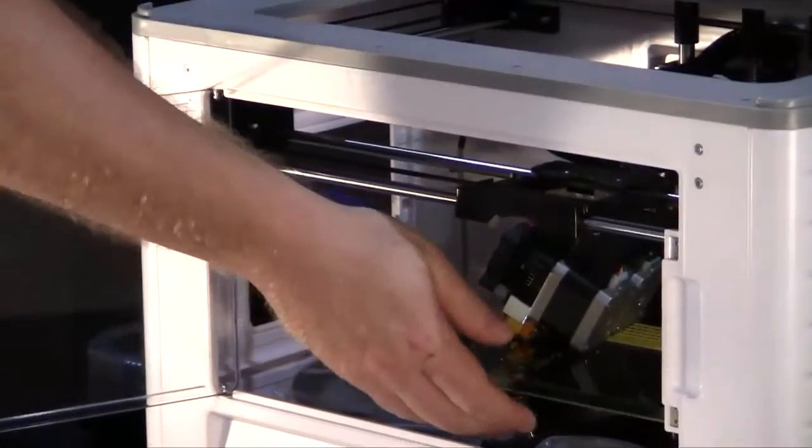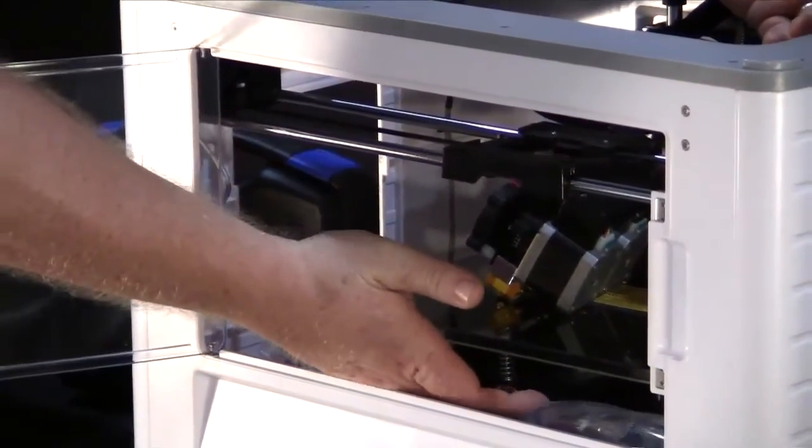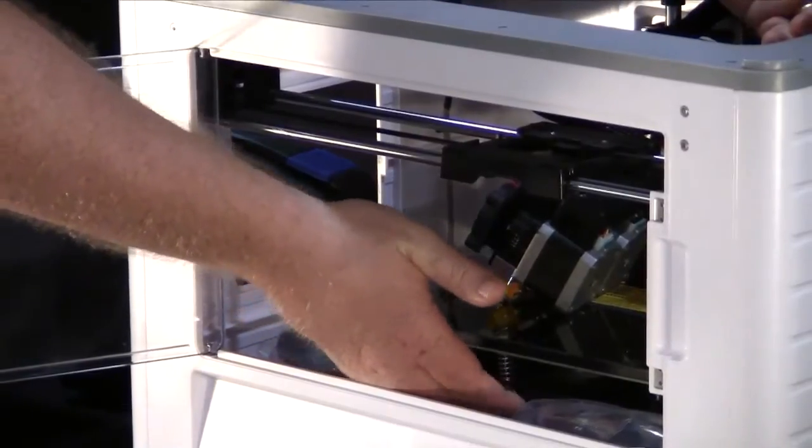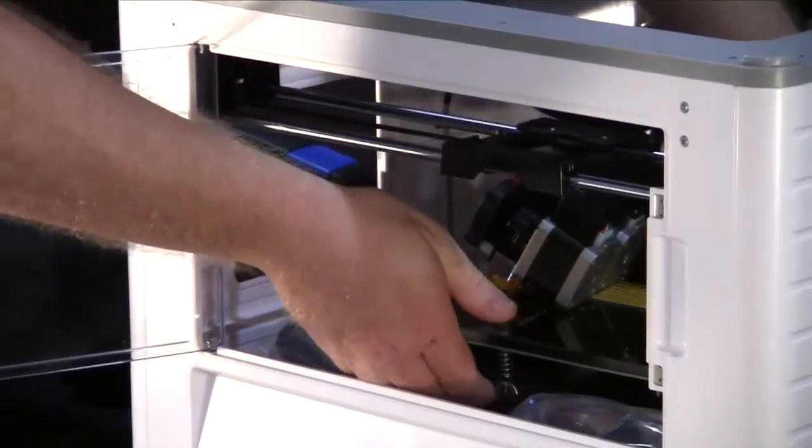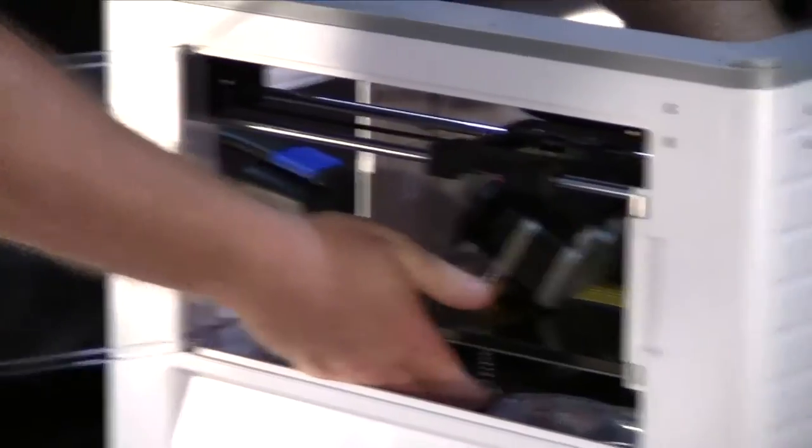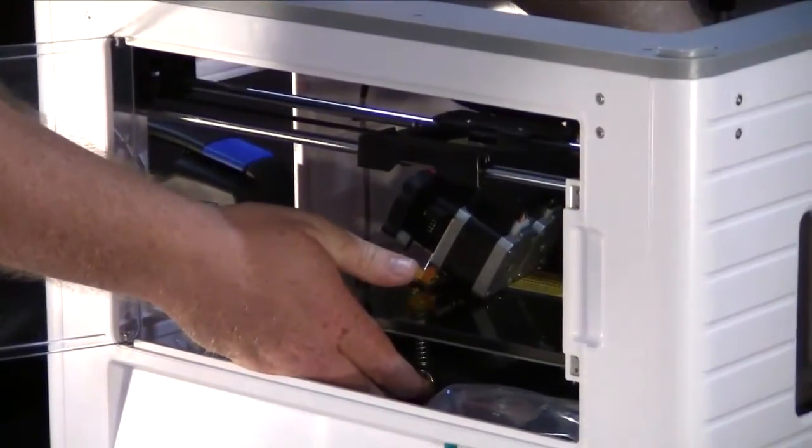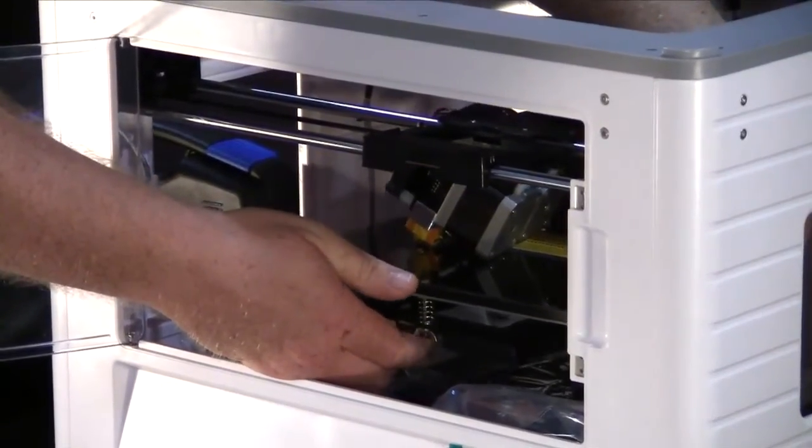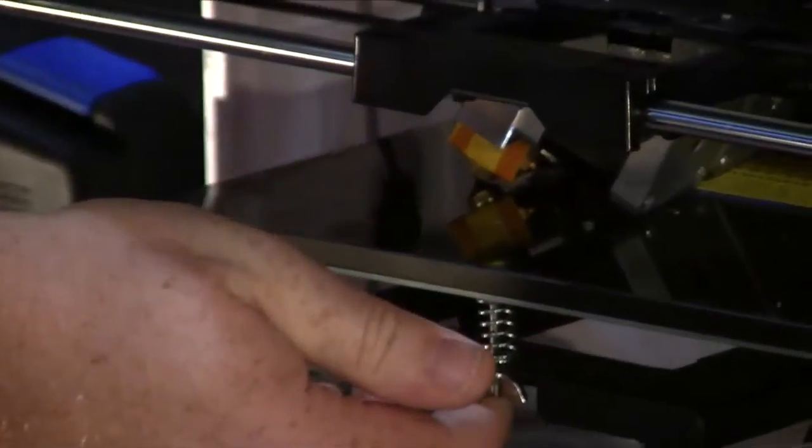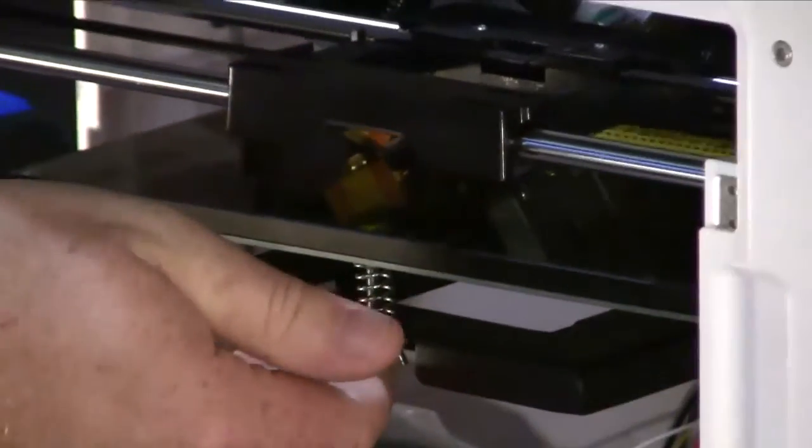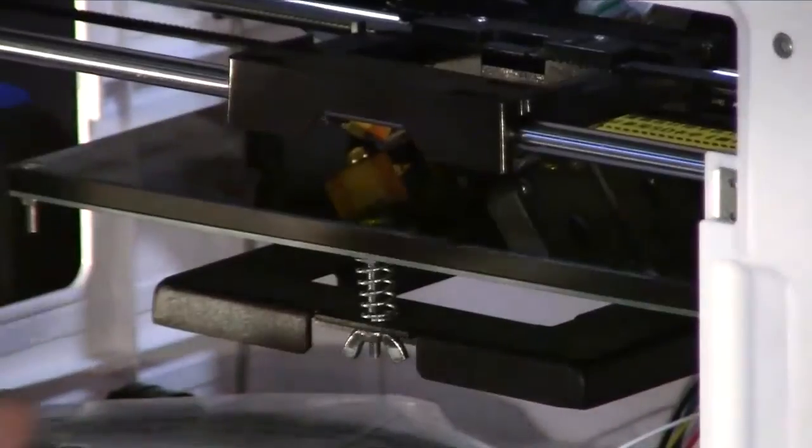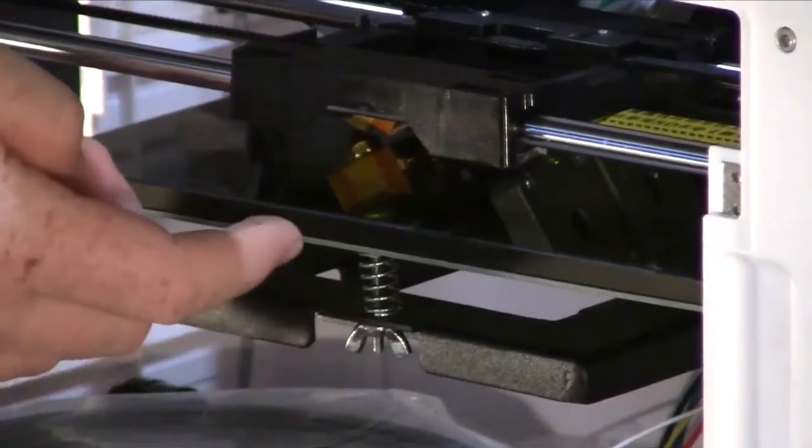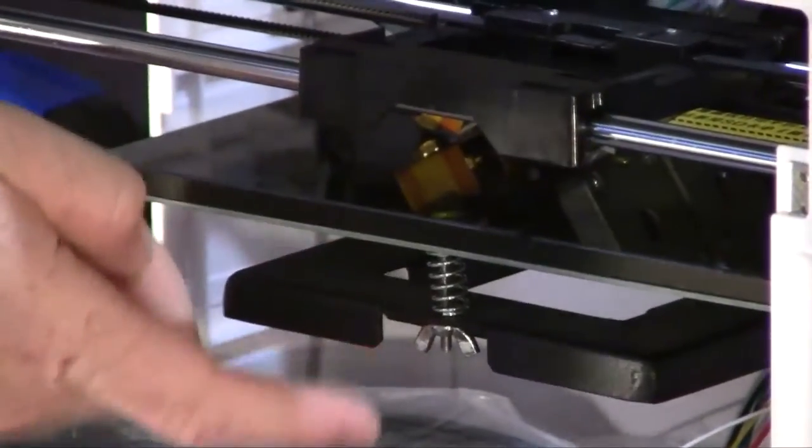So now we can lift up the work bed here. We'll just lift it up a little bit. I'm grabbing the metal part of the work bed and we can just pull that up. Pull it up slowly. It's winding the thread at the back there. Don't grab the heated bed itself when you do that, just pull up the metal.